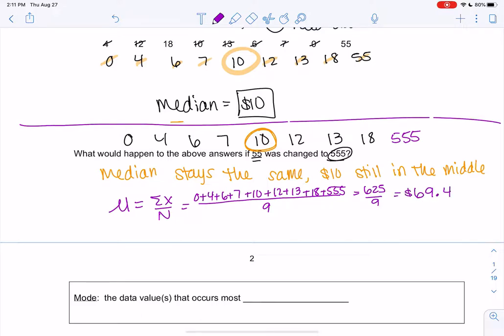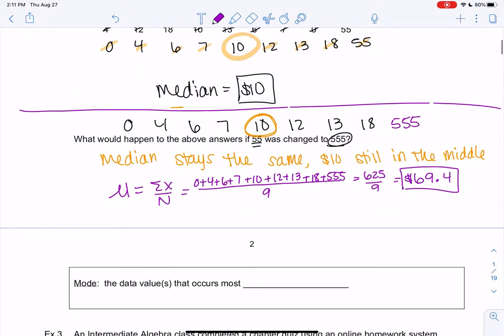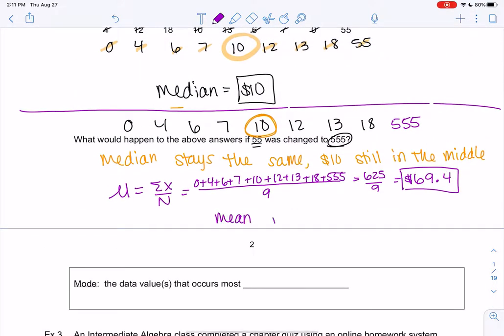69.4 dollars is my average. So the mean increased a lot. And the reason the mean increased is because the total increased.